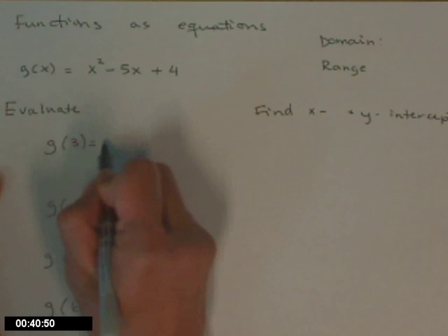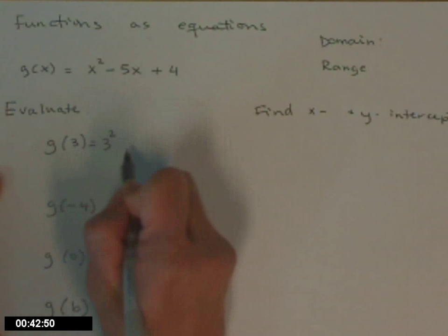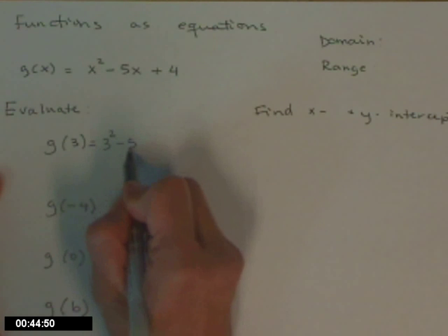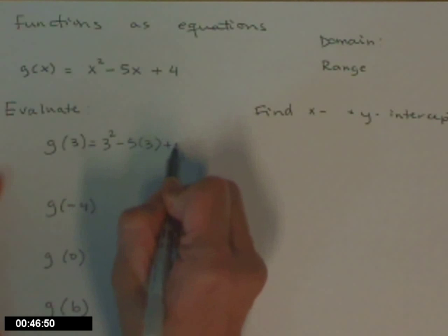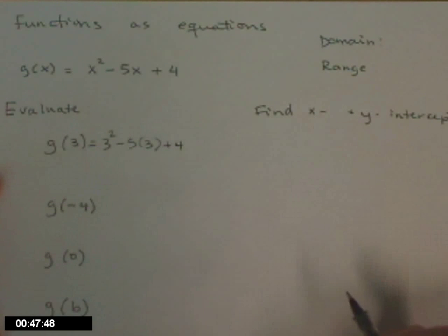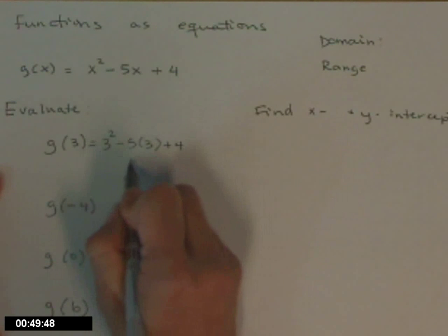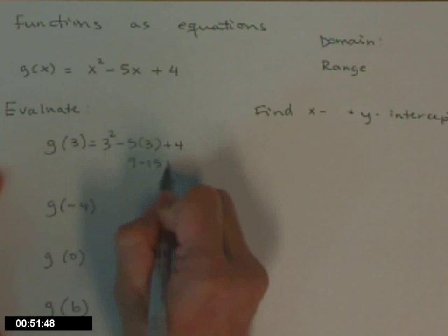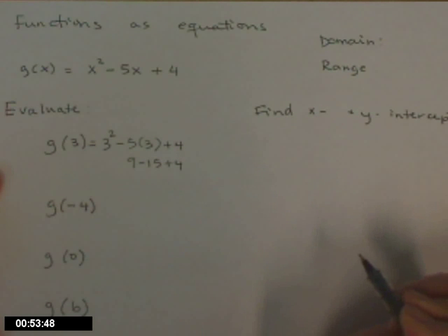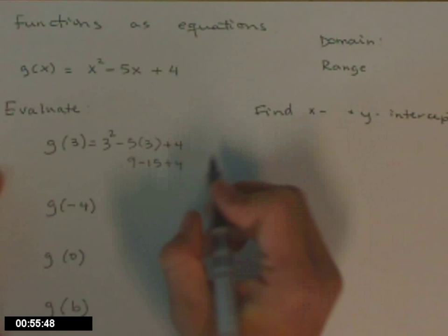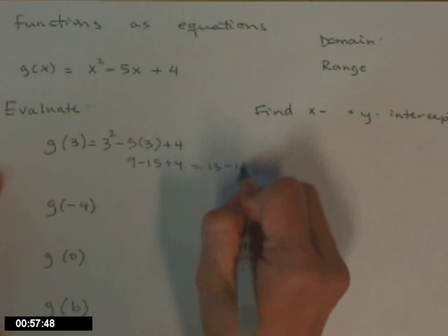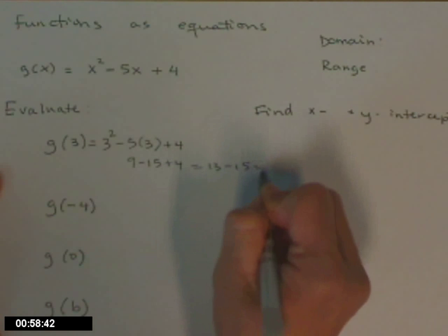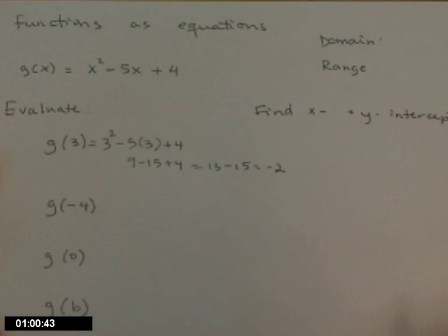So g of 3 means 3 squared minus 5 times 3 plus 4. And then we tidy that up to get 9 minus 15 plus 4, which is 13 minus 15, equaling negative 2.